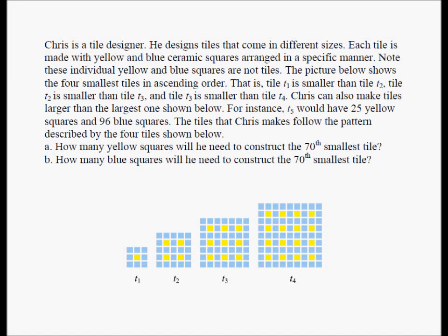Chris is a tile designer. He designs tiles that come in different sizes. Each tile is made with yellow and blue ceramic squares arranged in a specific manner. Note that the individual yellow and blue squares are not tiles. The picture below shows the four smallest tiles in ascending order.